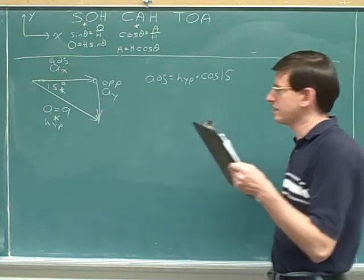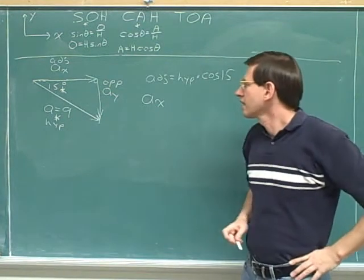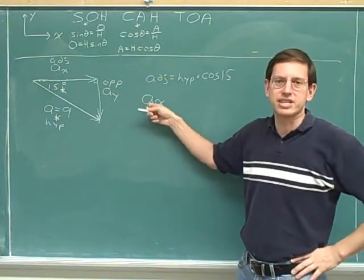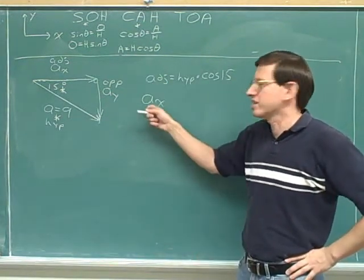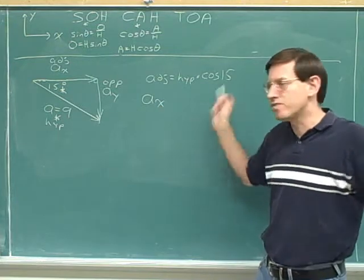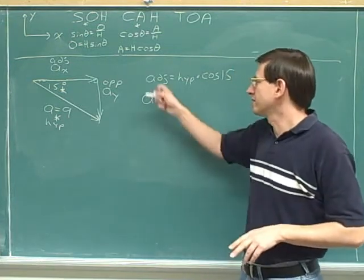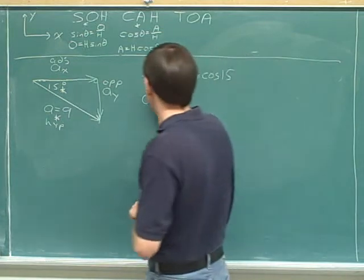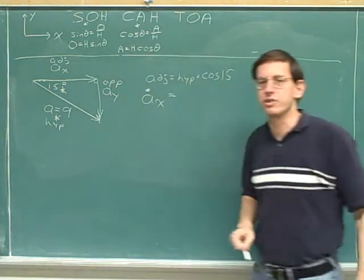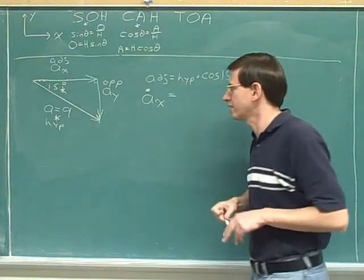Now, our adjacent side is a sub x. The adjacent side is a sub x. But you didn't write just a sub x here, did you? No, of course not. Because we're talking about the length of the adjacent side, which is just the magnitude of a sub x indicated with a dot. So I hope everybody used that dot.